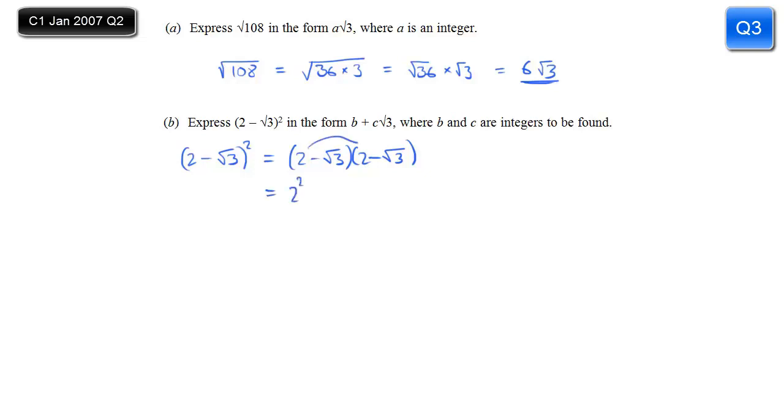So 2 times 2 gives me 2 squared. 2 times the minus root 3 is minus 2 root 3. Then the other minus root 3 times the other 2 gives me another minus 2 root 3. And finally, minus root 3 times minus root 3 gives me plus root 3 squared.